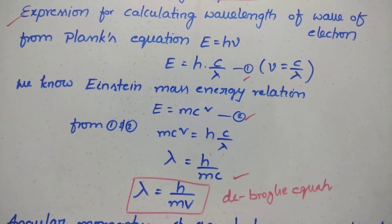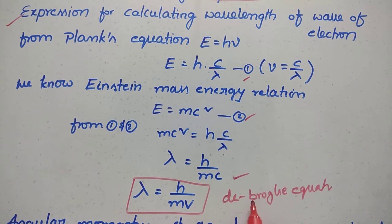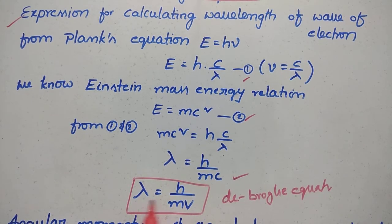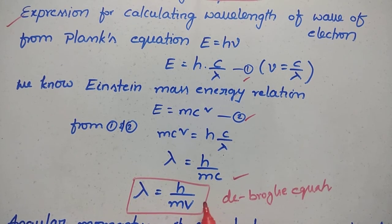You can write c as v, since v is the velocity of the particle. So this is the De Broglie equation, which gives you the wavelength of the wave of the electron: lambda equal to h by mv.